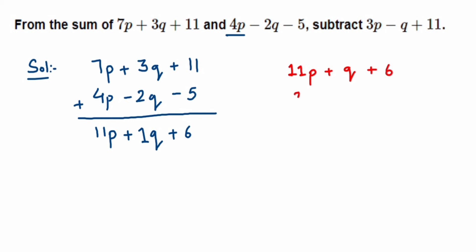Now one thing you should remember when you're subtracting: there is a minus sign here because we're subtracting, so the signs will change of the second expression when you're subtracting it. So 3p is positive right now, so it becomes negative. And then -q will become +q, and +11 becomes -11.